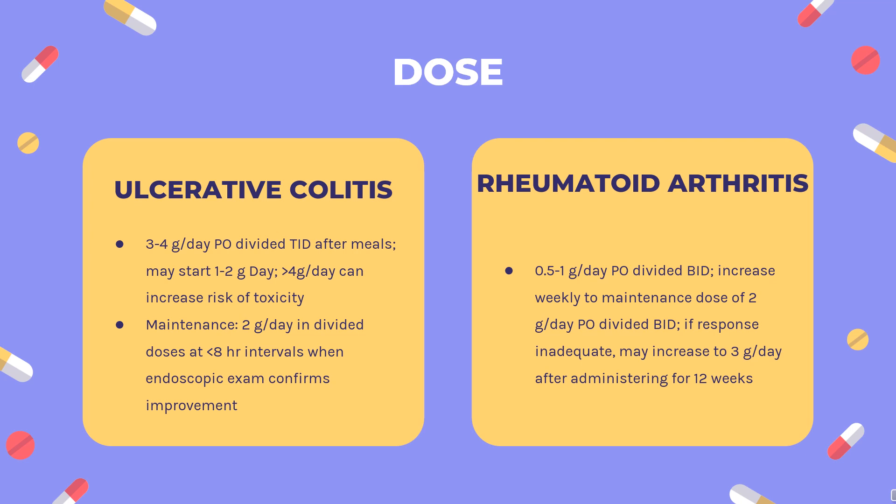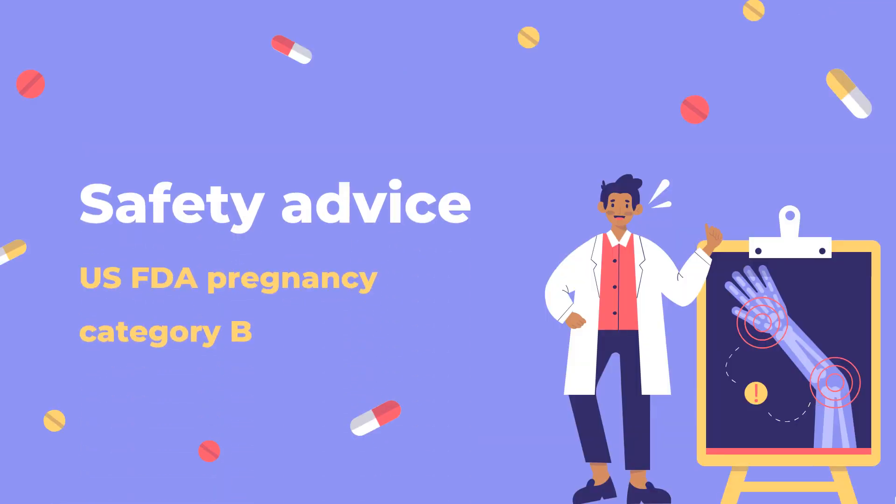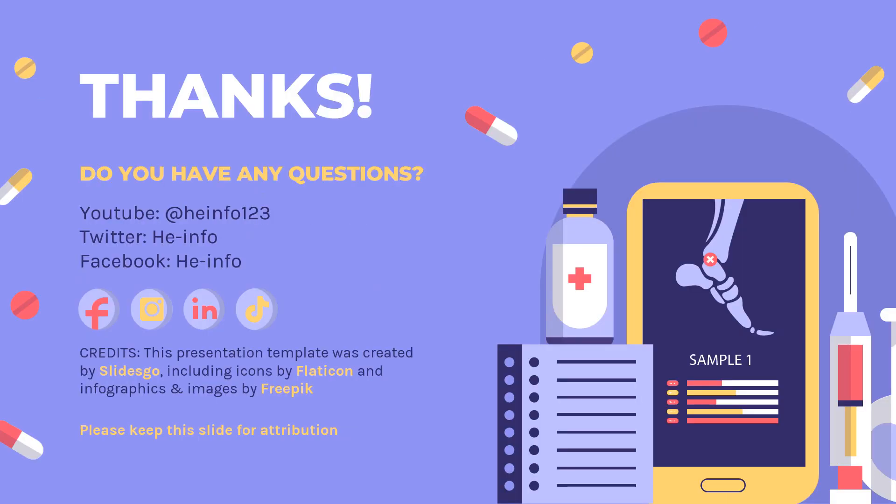Crohn's disease (off-label): 3–6 g/day PO in divided doses for up to 16 weeks. Safety advice — Pregnancy category B: There are no adequate and well-controlled studies of sulfasalazine in pregnant women. That's all the information about sulfasalazine we collected.